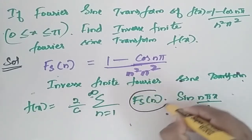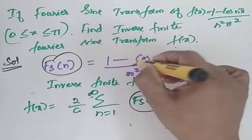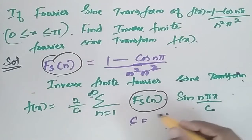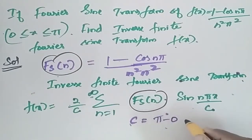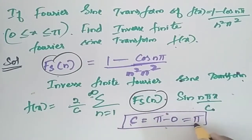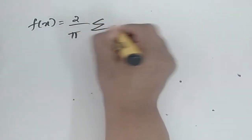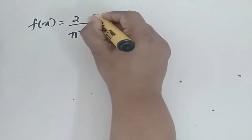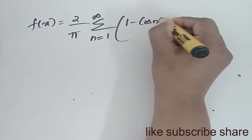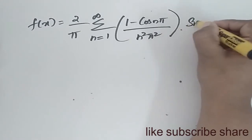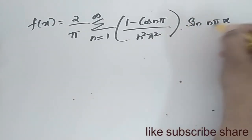Now we have f(n). We also have c, which is equal to the upper limit minus the lower limit: π minus 0, that is equal to π. So f(x) is equal to (2/π) times the summation from n = 1 to infinity of (1 - cos nπ) / (n²π²) times sin(nπx/π).